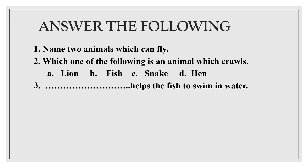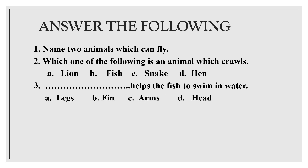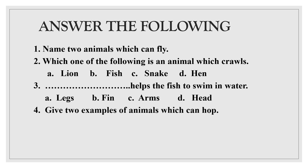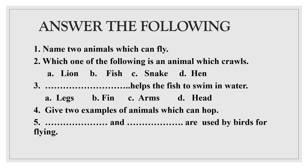Question number three: Dash helps the fish to swim in water. Options — A. Legs, B. Fin, C. Arms, D. Head. Fourth question: Give two examples of animals which can hop. Fifth and the last question: Dash and dash are used by birds for flying.